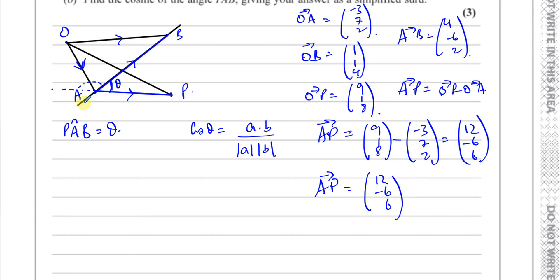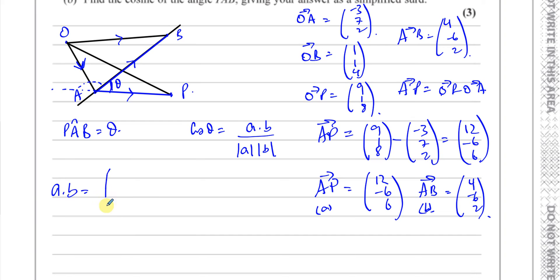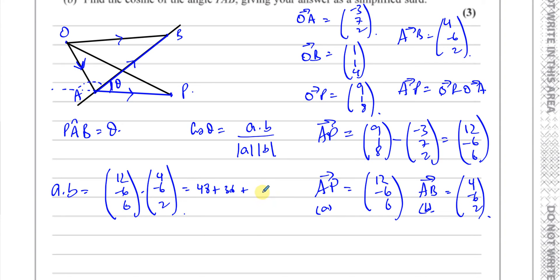I know vector AB is (4, −6, 2). Now I can find the angle between them. Let's call AP vector A and AB vector B. The dot product A dot B is (12, −6, 6) · (4, −6, 2) = 12×4 + (−6)×(−6) + 6×2 = 48 + 36 + 12 = 96.